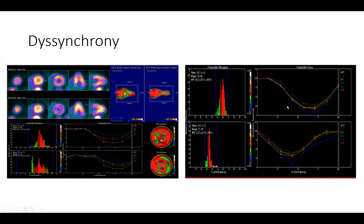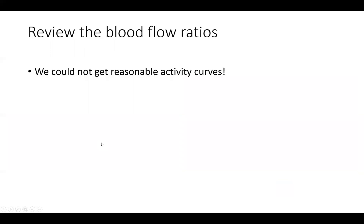We go to the synchrony analysis. In the normal patient, rest and stress show all segments contracting almost in unison, arriving at peak contractility at the same time. But in our patient you can see this scattering of contractility where no segment achieves a nice summation, resulting in significant dyssynchrony. Despite our best efforts we could not generate activity curves that are reasonable for this patient, therefore we did not report the myocardial blood flow or the flow reserves. You should not report it if the activity curves are not properly tracking the activity in the left ventricle.